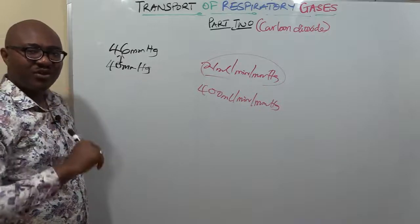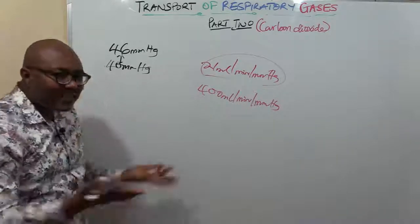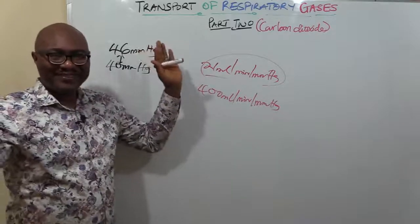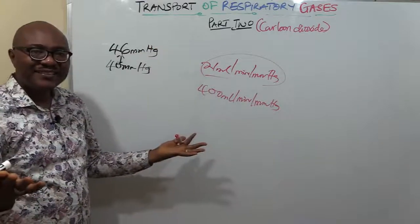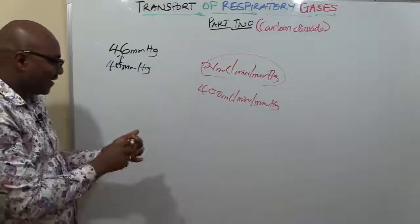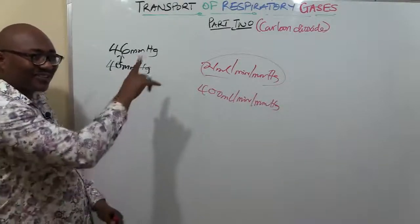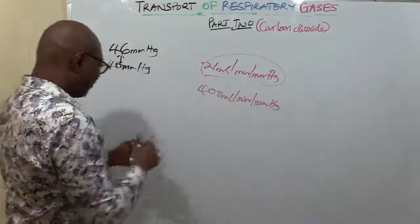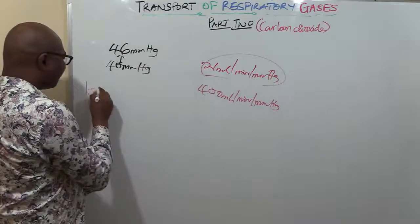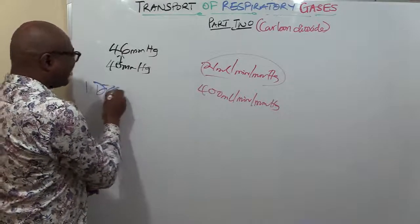It's transported to the lungs where it will be expelled. In what forms does blood transport carbon dioxide? There are three forms.